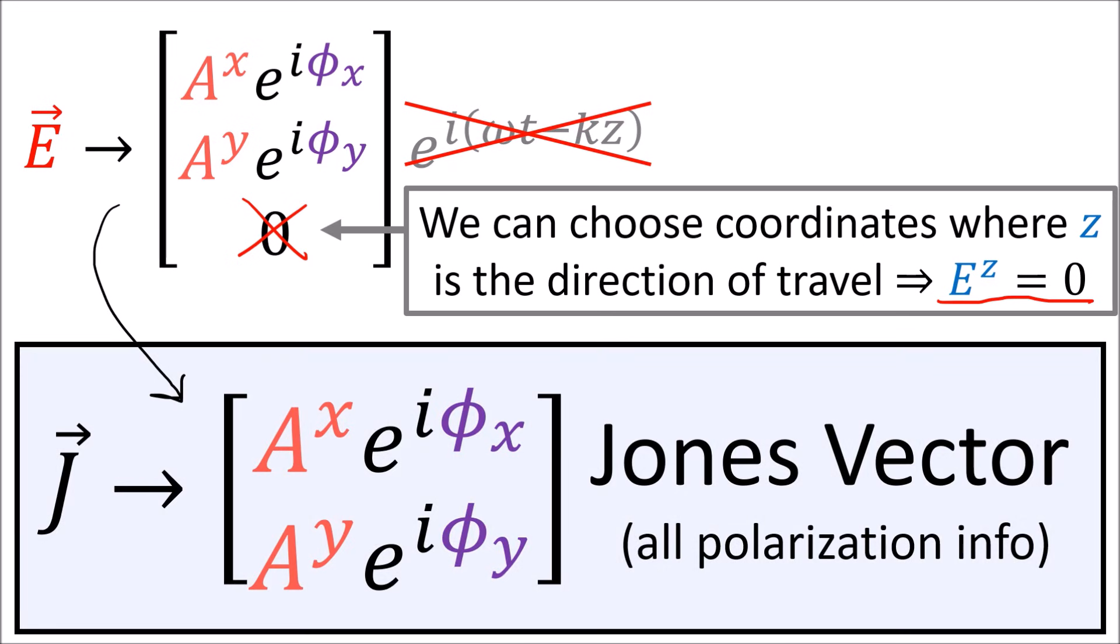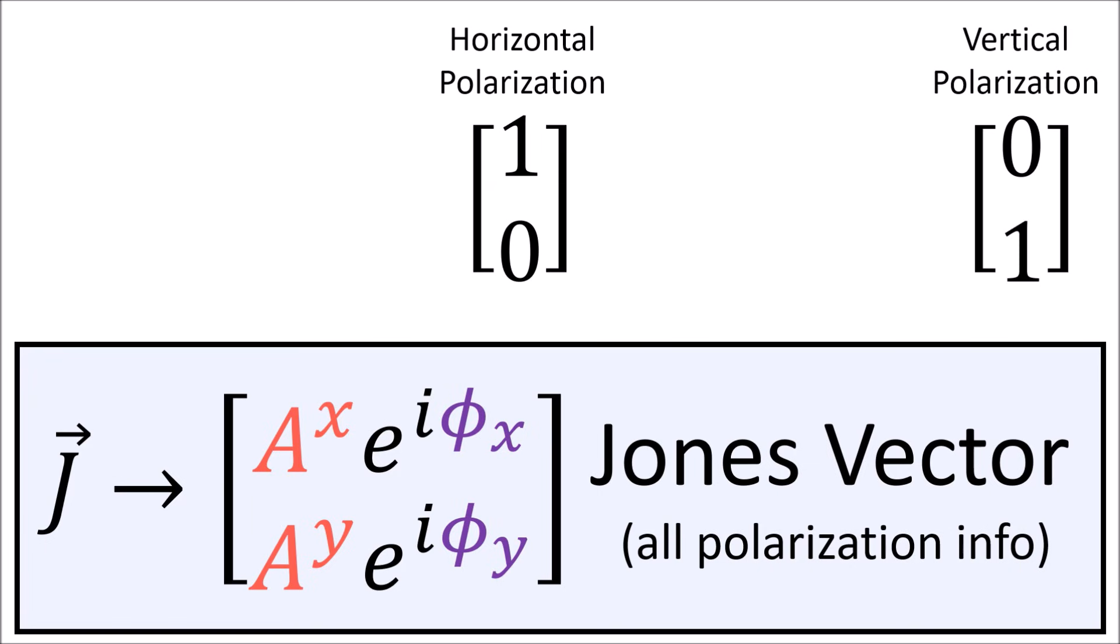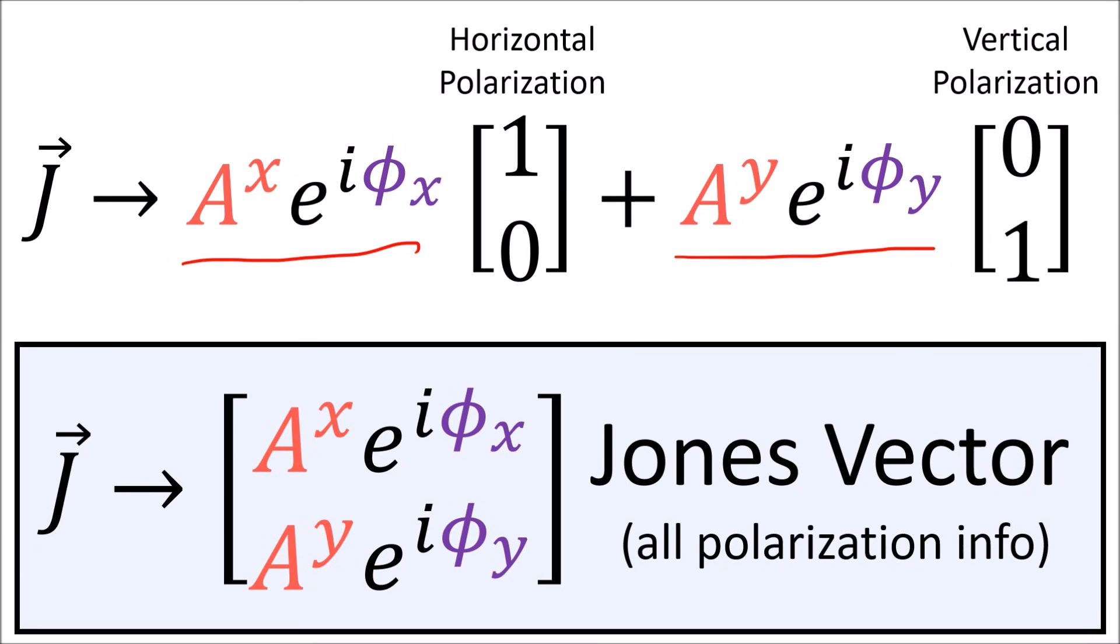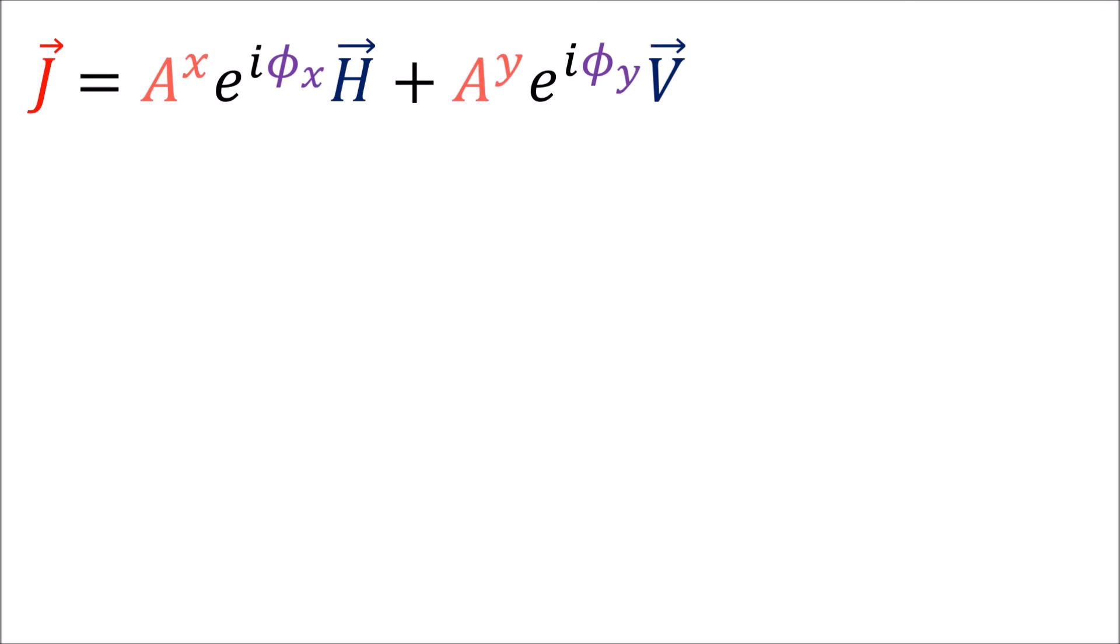The resulting two by one column of complex numbers is called a Jones vector, and it tells us everything we need to know about the polarization of a given wave. Any light wave polarization can be written as a linear combination of a horizontally polarized wave and a vertically polarized wave, each with complex numbers in front denoting their respective amplitudes and phases. Moving forward, I'm going to write this horizontally polarized wave of amplitude 1 using the vector capital H, and I'll write this vertically polarized wave with amplitude 1 using the vector capital V.